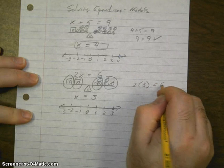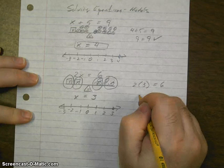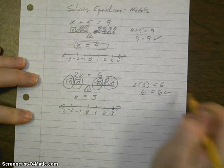2 times 3 equals 6. 2 times 3 is 6, and 6 equals 6. That checks.